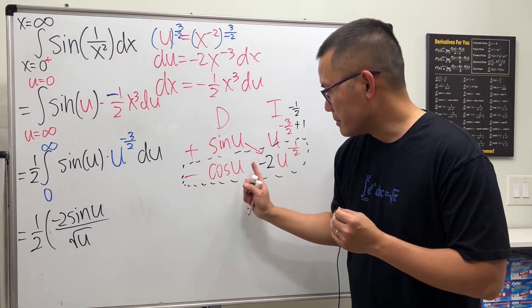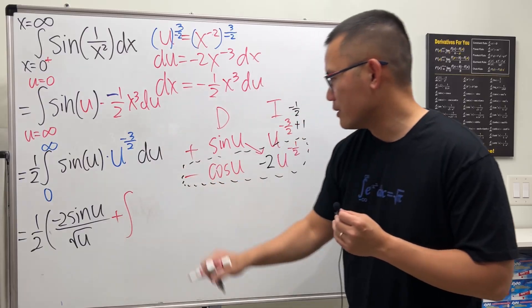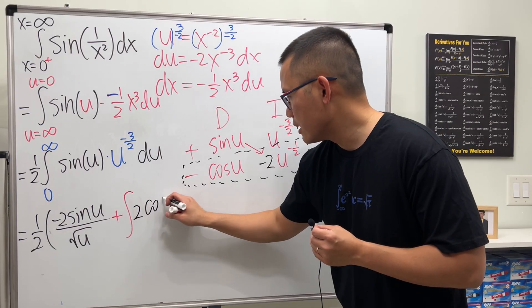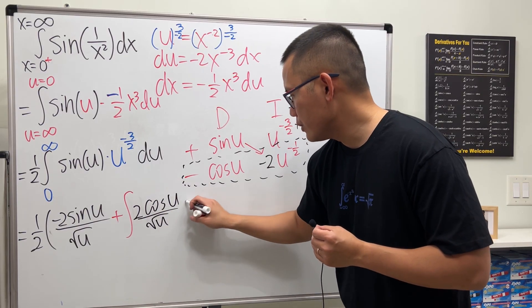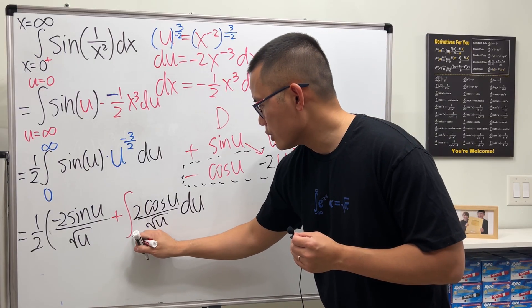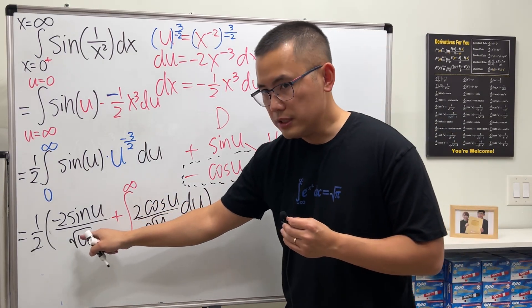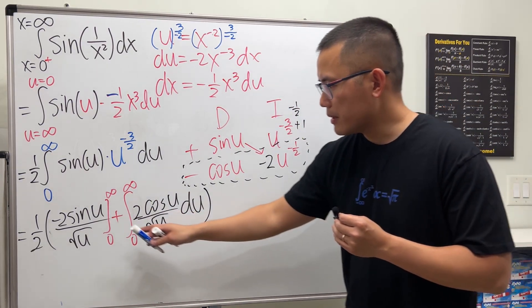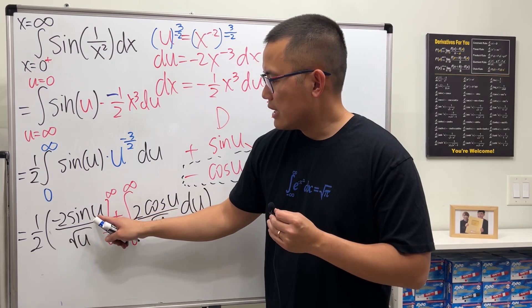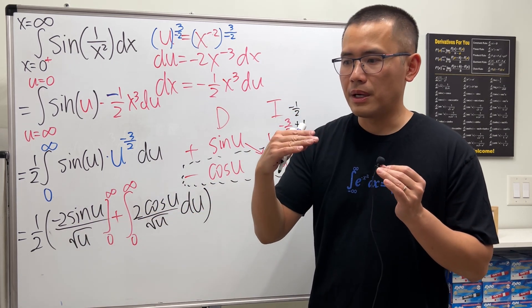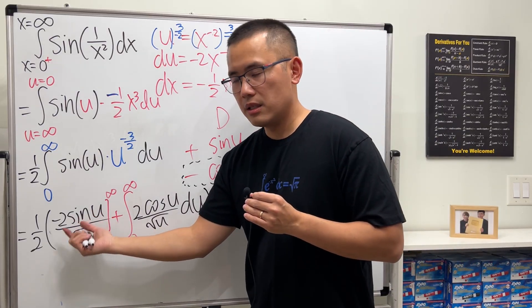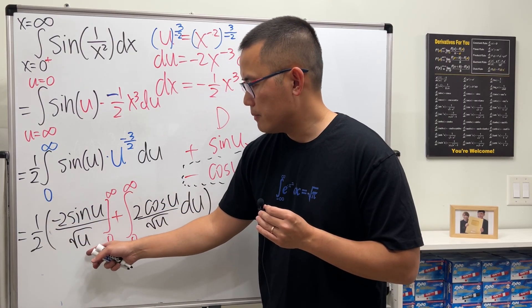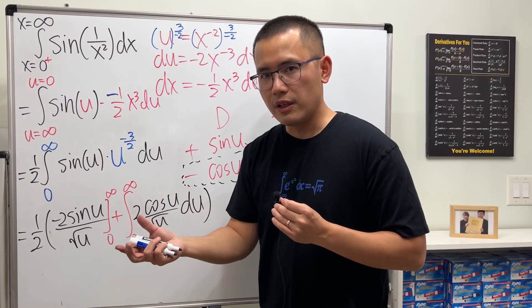Anyway, so, negative times negative. That's going to be a plus integral. And then we have the, let me just write down 2, 2 cosine u over square root of u du. And for this integral, it still goes from 0 to infinity. But for the first part, we will have to evaluate it from 0 to infinity. Now, let's just talk about this real quick. Sine u is a bounded function. It's bounded between negative 1 and 1. It's always finite. When you put infinity to the first part, it's just finite over square root of infinity, which is infinity. Finite over infinity is going to be 0.